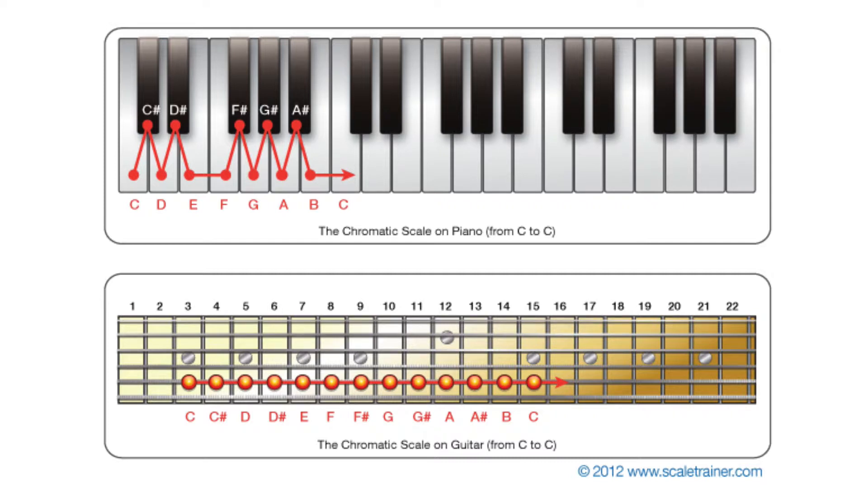The two lone exceptions to the above rule are the natural note sets B-C and E-F. These are the two spots on the piano where there is no black key or accidental between them, and as you learn the notes on your guitar, the same holds true. This stuff is pure music theory and applies to any instrument you want to play.